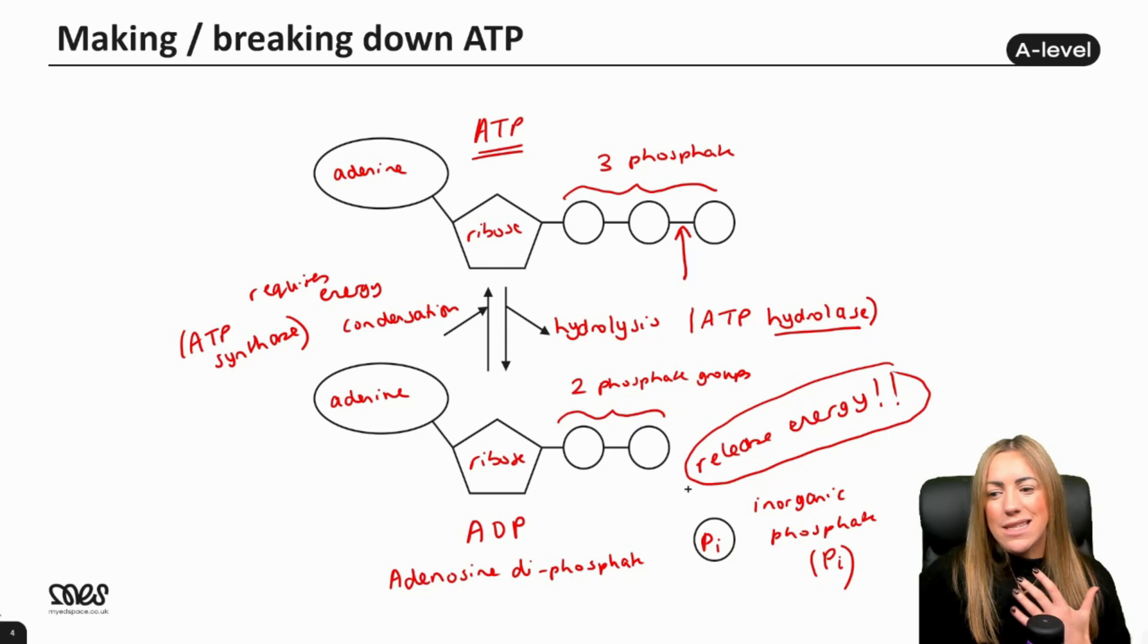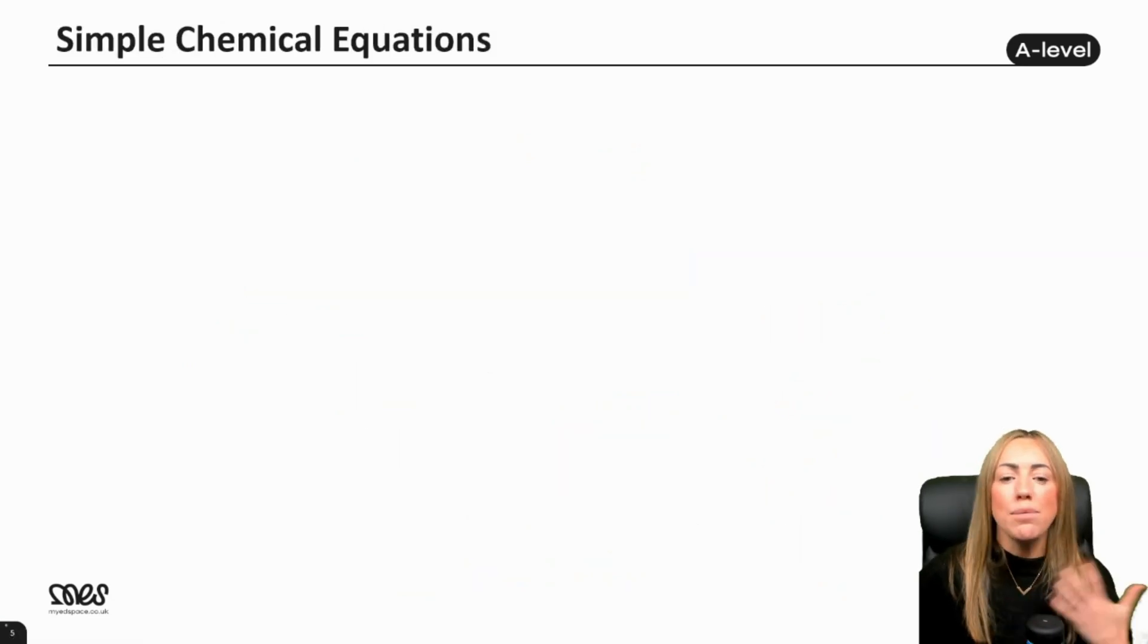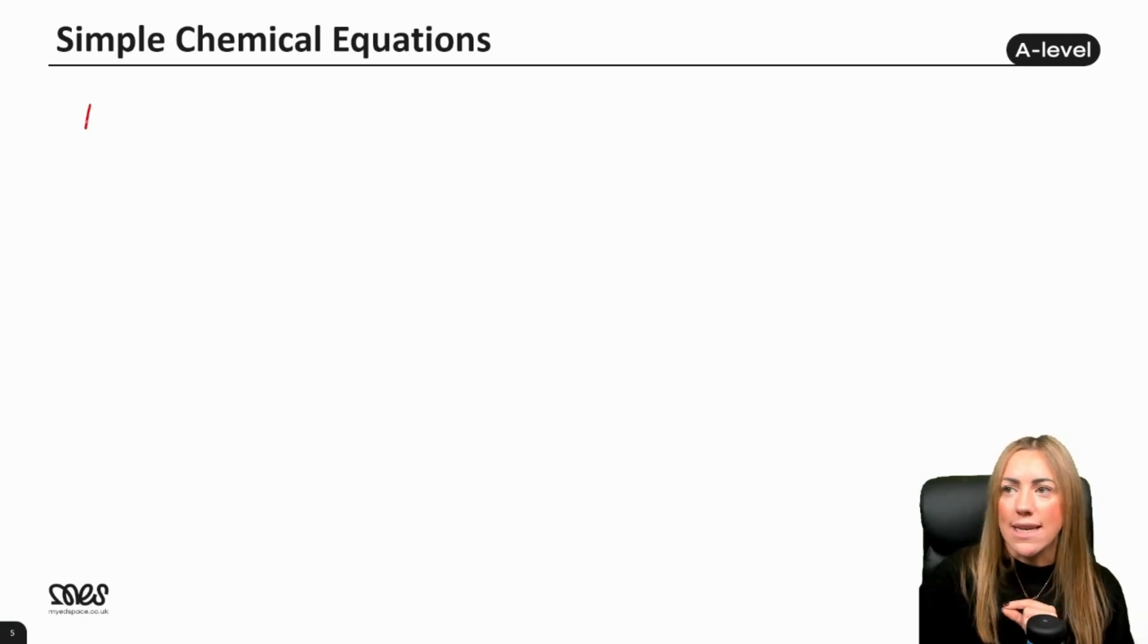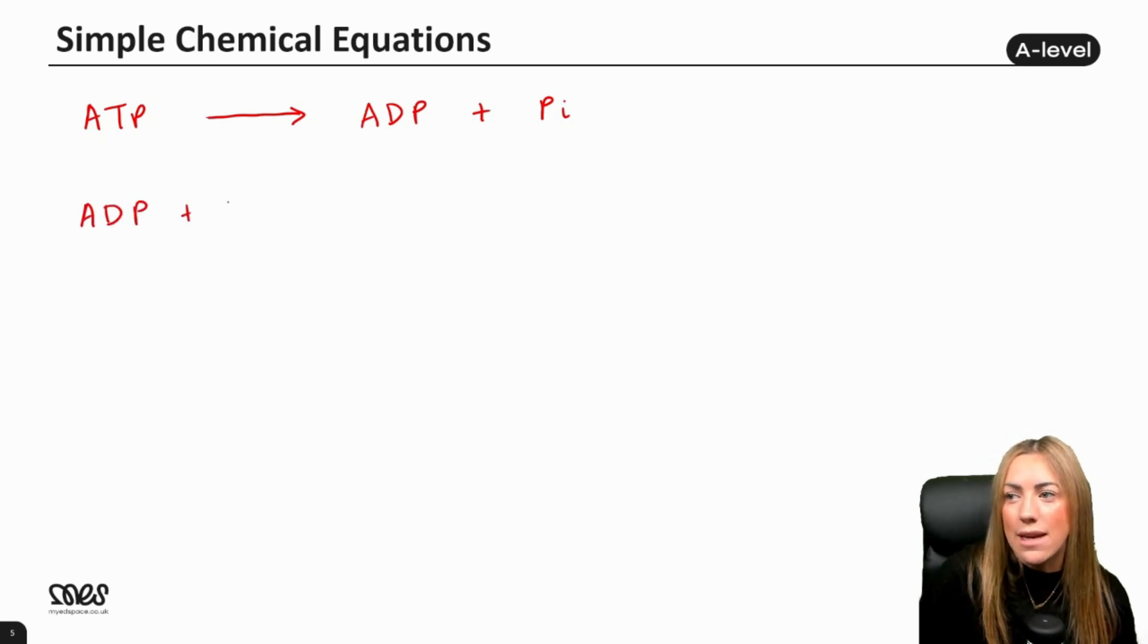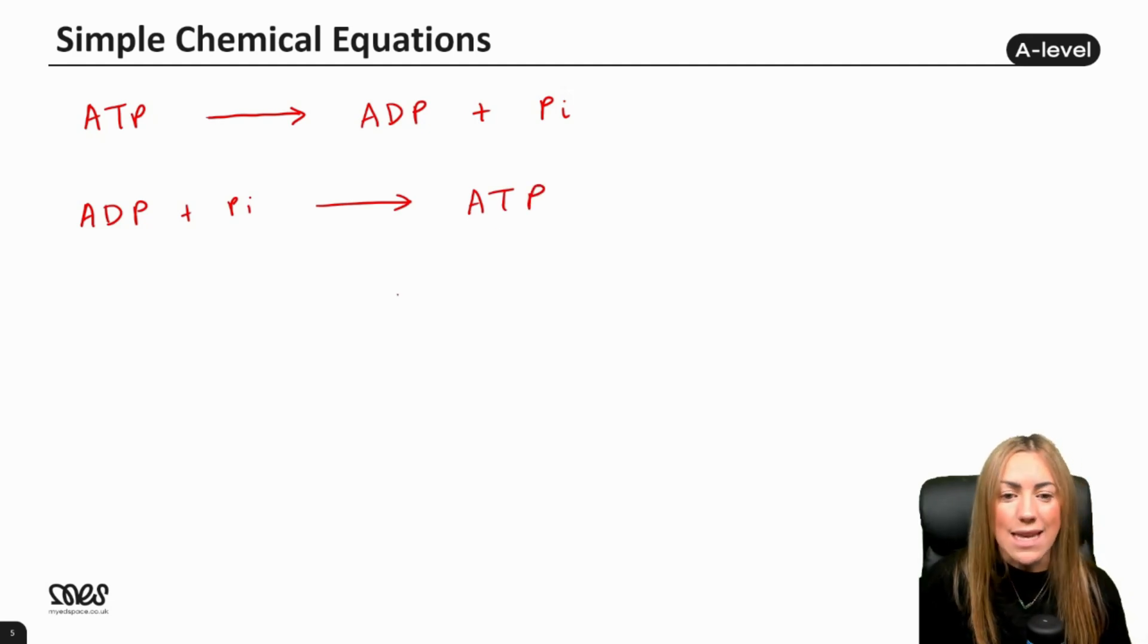Let's look at this in a simpler way. Simple chemical equations showing how we can synthesize and hydrolyze ATP. In the simplest form, if we're going to hydrolyze ATP, we'd show our ATP or adenosine triphosphate undergoing hydrolysis, producing ADP, adenosine diphosphate, and an inorganic phosphate. If we're going to make or synthesize ATP, we take ADP and Pi and join them together in a condensation reaction to make ATP. This is the simplest equation.